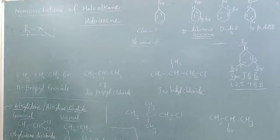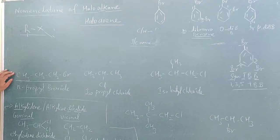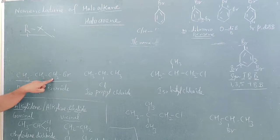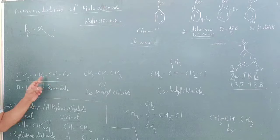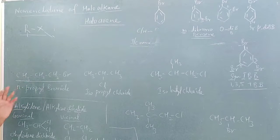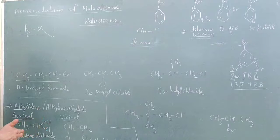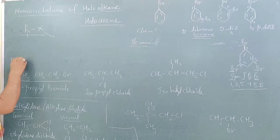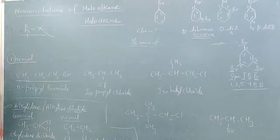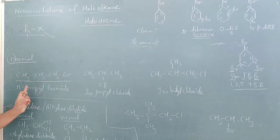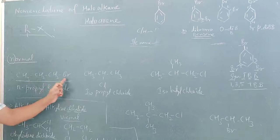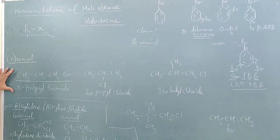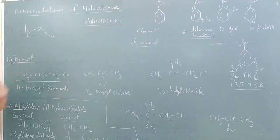Now one more example: CH3-CH2-CH2-Br. There is a straight chain here, no branch chain available. This carbon is primary, this carbon is secondary. When primary and secondary carbons are present, we use the word 'normal', represented as 'n'. How many carbons? Three. So common name is n-propyl bromide, because there is no branch chain.